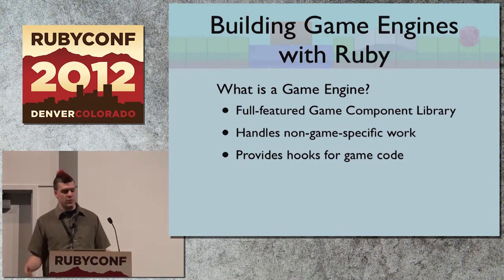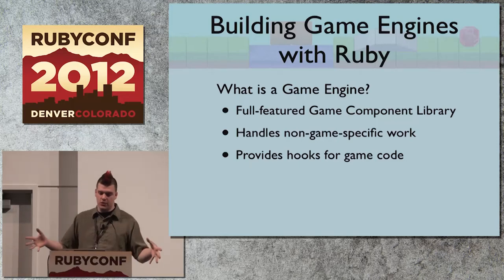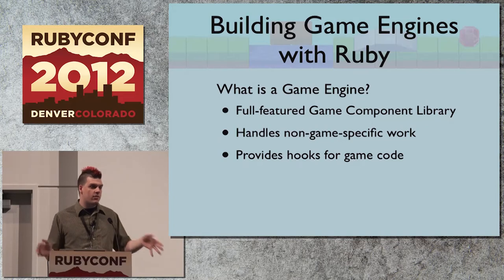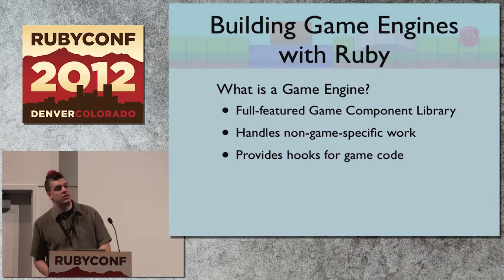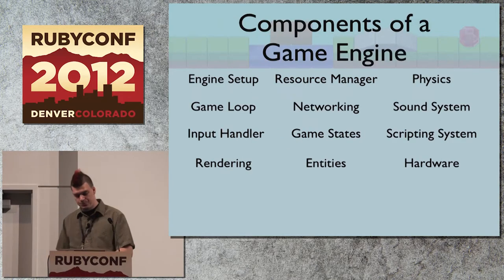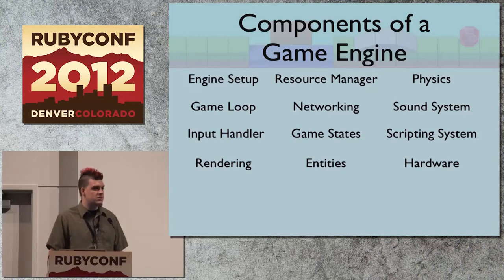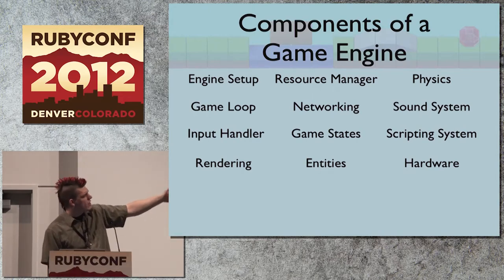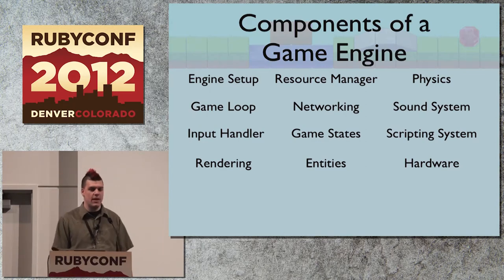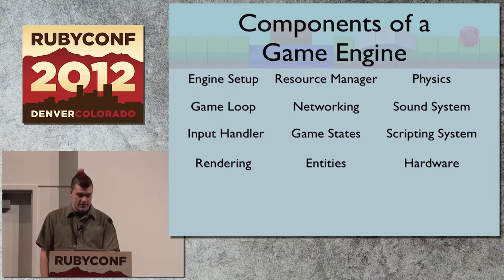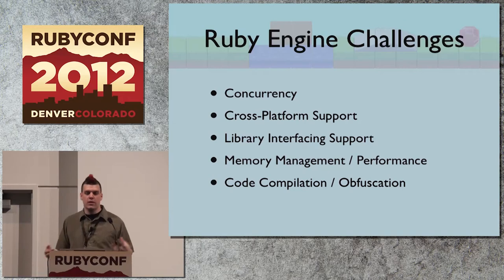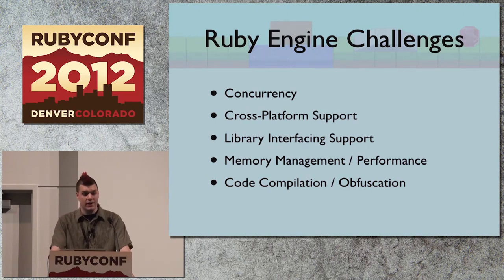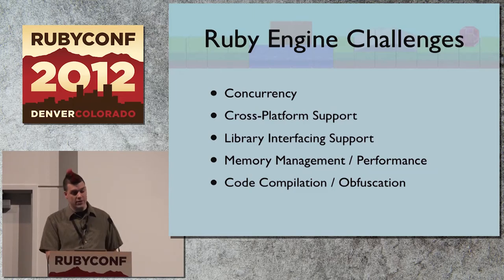So let's build a game engine with Ruby. A game engine is a component library that consists of all of these internals and allows non-game-specific work to be offloaded for game developers, providing all the hooks necessary if a game needs to drop down into the engine level. The major components of a game engine, if you're going to build anything substantial, include: engine setup, the main game loop, input handler, and rendering. We've talked about all of those. But there are bigger challenges: the big ones are concurrency, cross-platform support, library interfacing support, memory management, and code compilation. Let's talk about each of these individually.